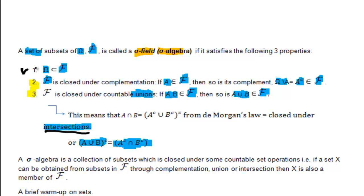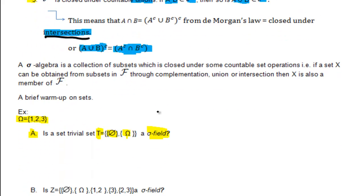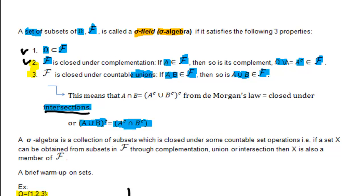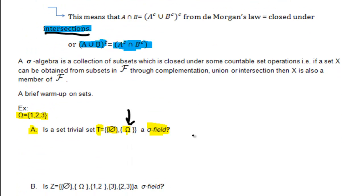The first criterion is that omega is a member of F. Indeed, omega is a member of T, so we give it a check. The second condition says F is closed under complementation: if A belongs to F, then so must its complement. If omega is our subset A, its complement is the null set — the empty set. Checking whether the empty set is part of set T: indeed it is. So the second condition is met.